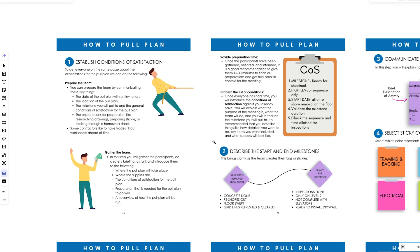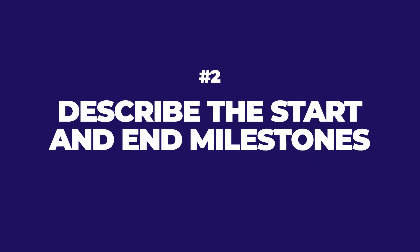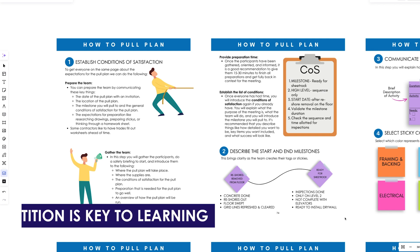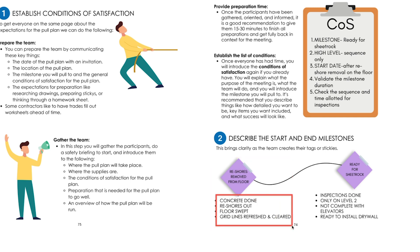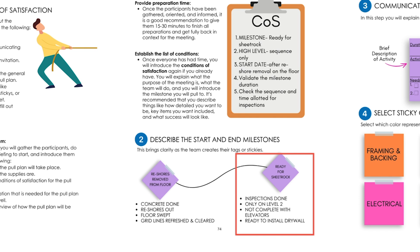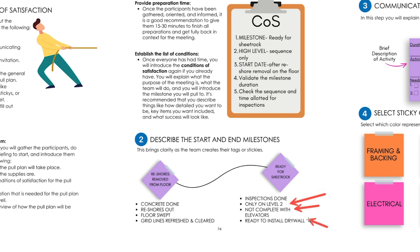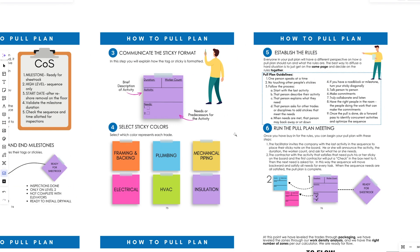When we start the actual pull plan, one of the first things I do is describe the start and end milestones. Repetition is key to learning. For example, the start milestone might be: concrete's done, reshores are out, floor swept, grid lines refreshed. The end milestone — 'ready for sheetrock' — means inspections are done, we're only on level two, and we're ready to install drywall.